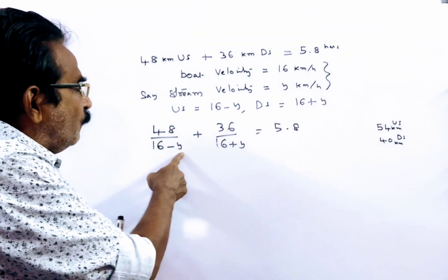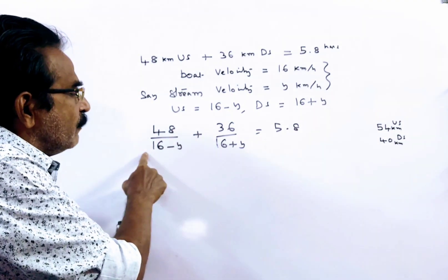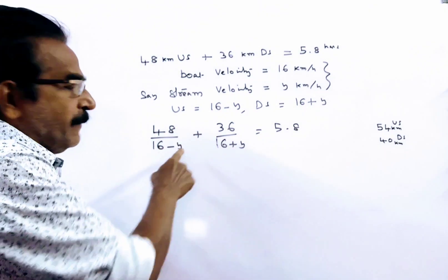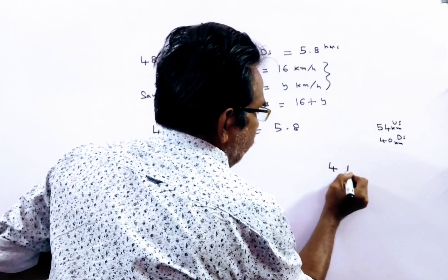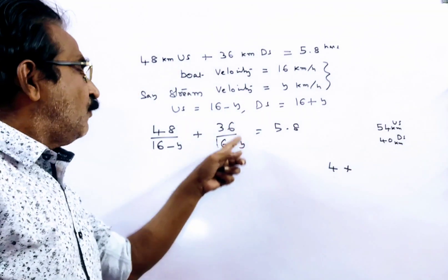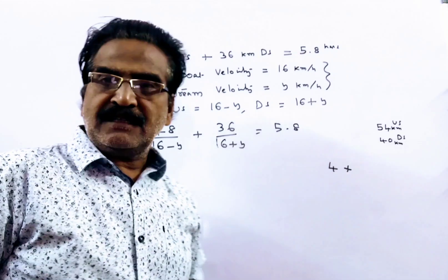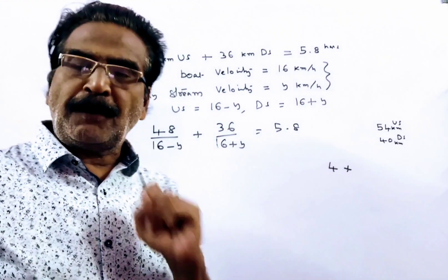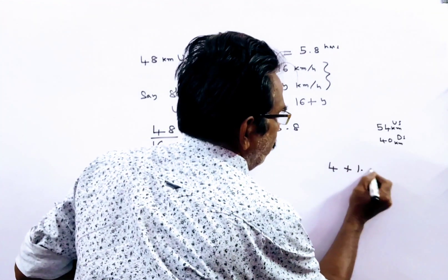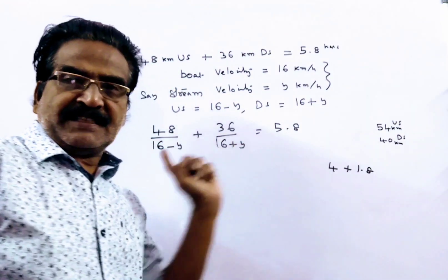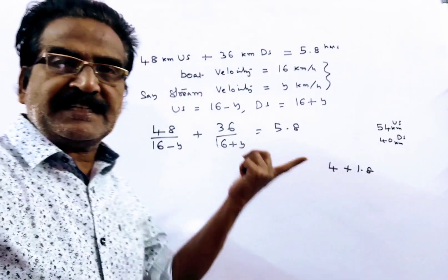If y equals 4, then 48 by 12 is 4 hours, and 36 by 20 is 1.8 hours. 4 plus 1.8 equals 5.8 hours. So y equals 4 satisfies this equation.